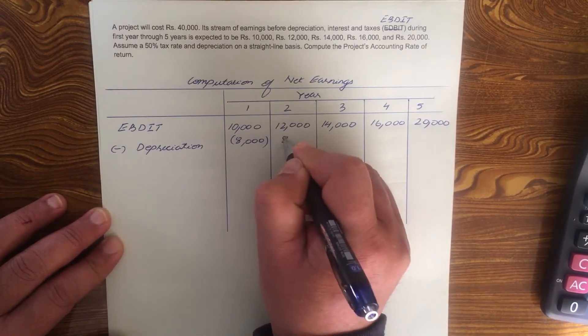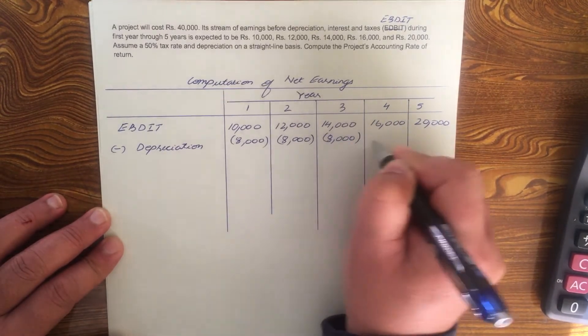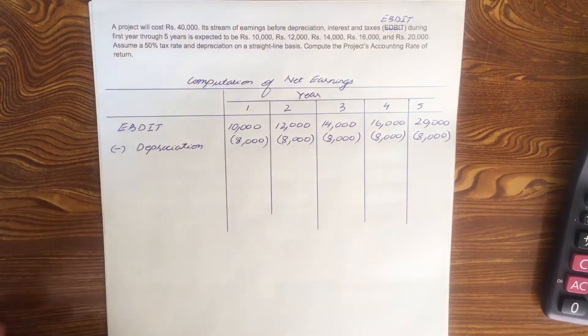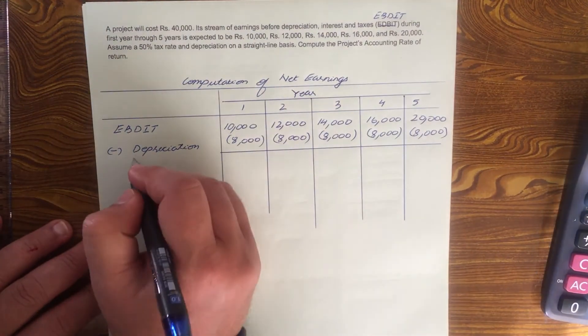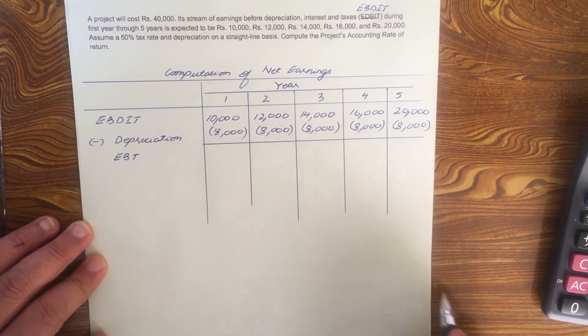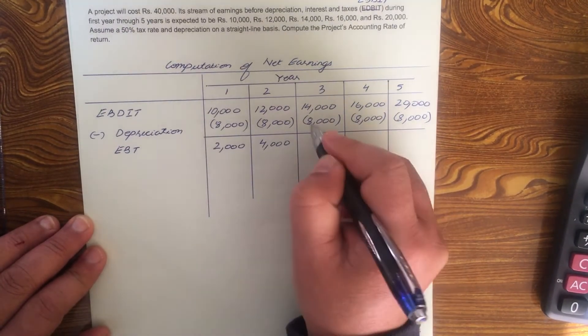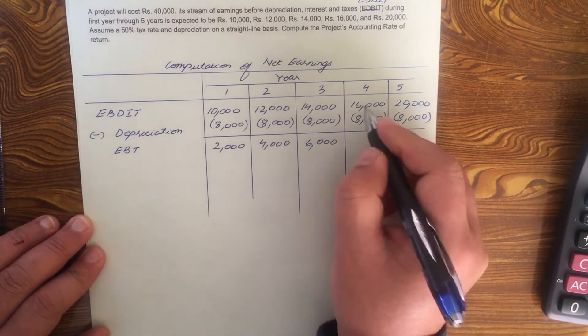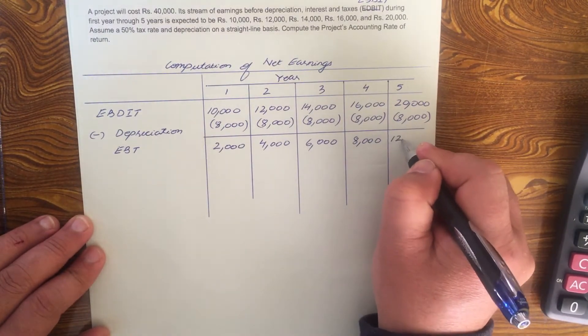So deduct 8,000. Always remember when figures are in brackets, it means they are being deducted. It is a negative value. This is your earnings before tax, EBT. So this will be 2,000, 4,000, 14 minus 8 is 6,000, 16 minus 8 is 8,000, and 20 minus 8 is 12,000.